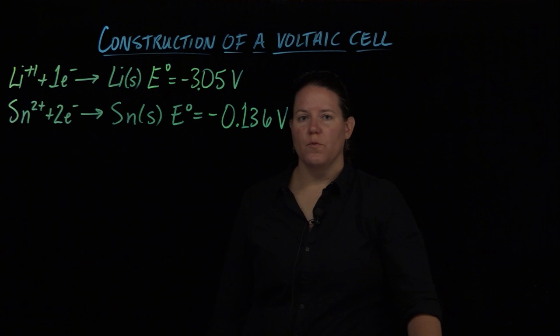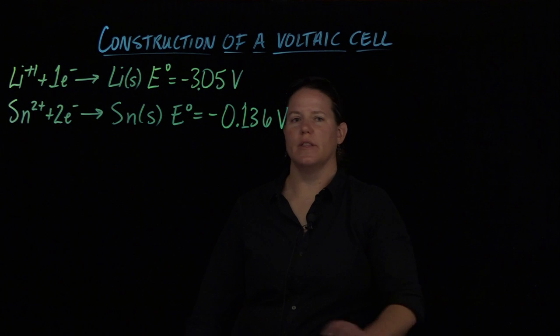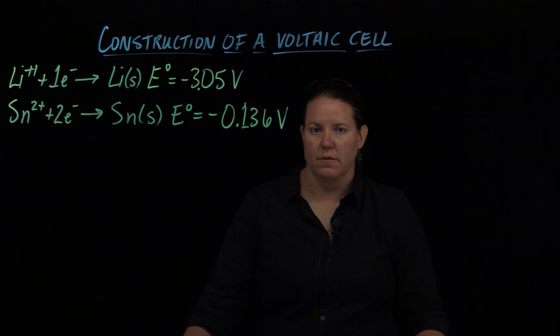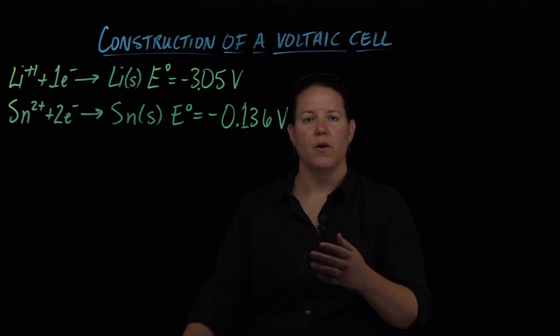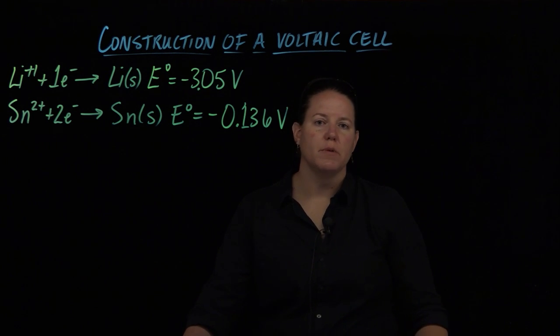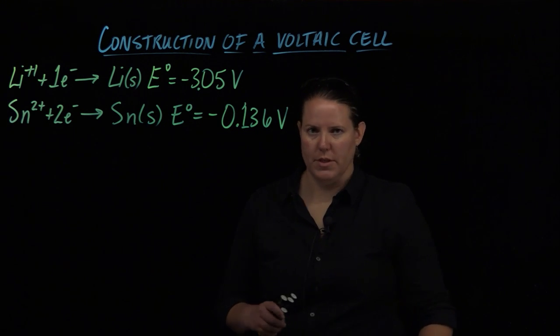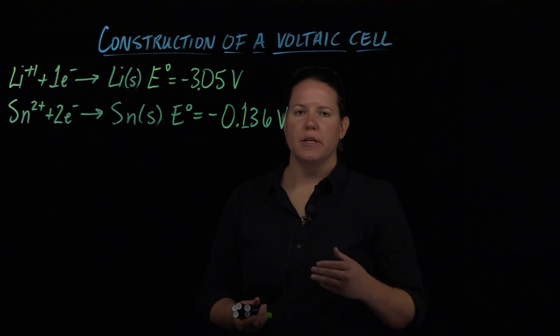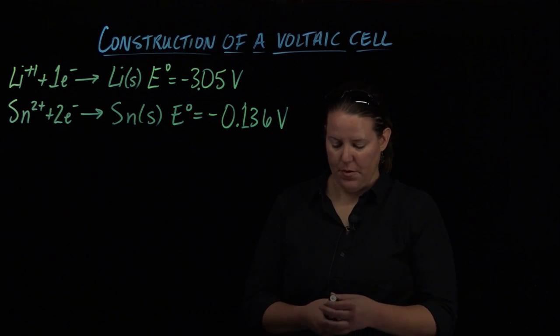We have two reactions here, really they're half reactions as we all know. We have lithium and we have tin-2. Both of these are written as reductions because when we talk about the cell potential, the standard cell potential is in terms of the reduction. It's called a standard reduction potential for a reason. So when we look at each of these, we need to decide which one is going to be the anode and which is going to be the cathode.